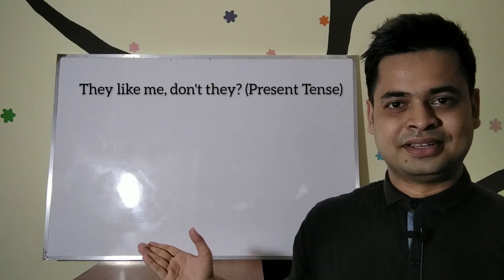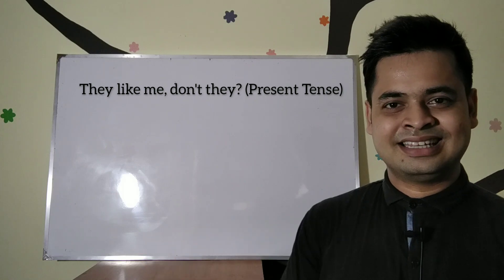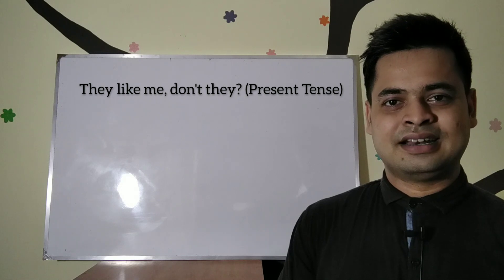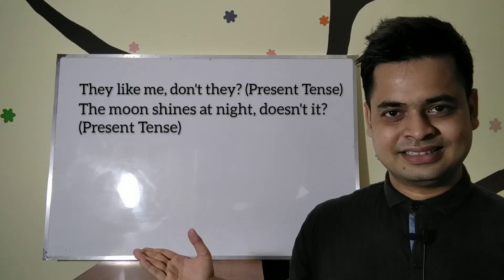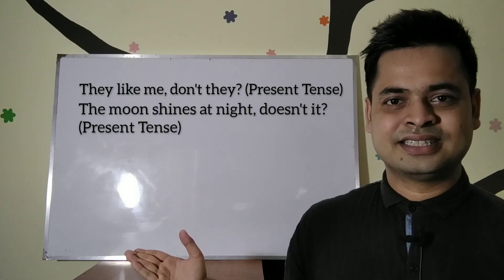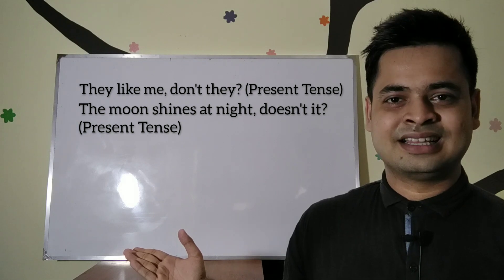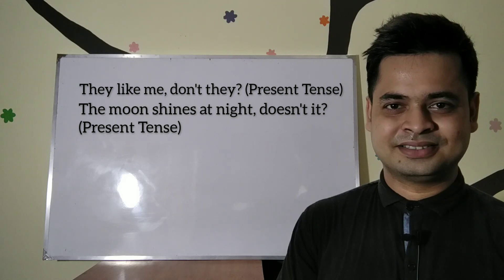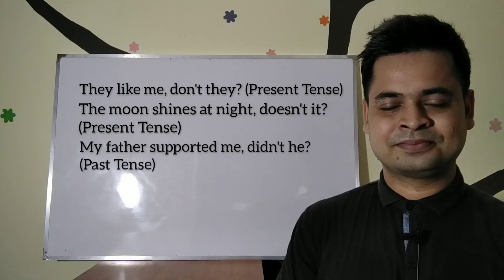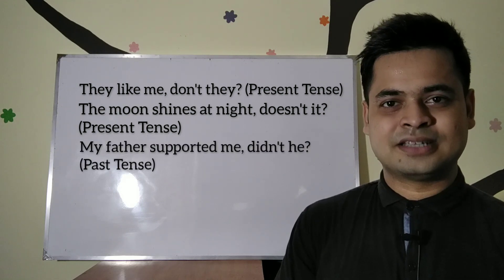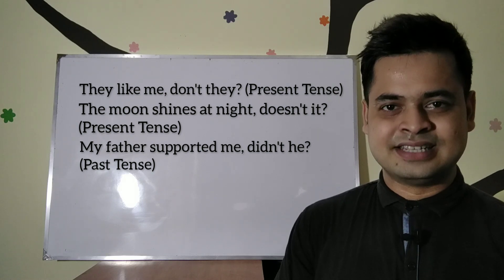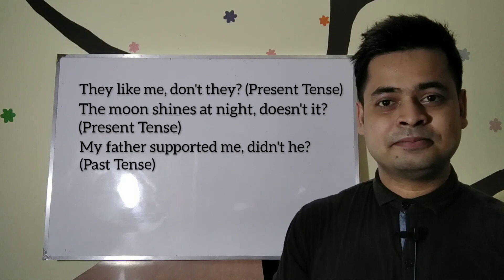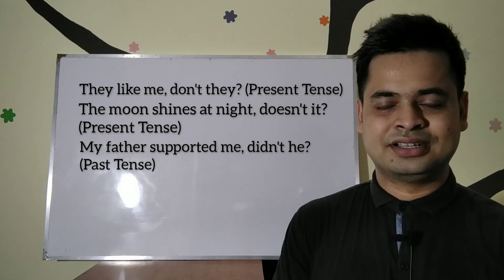For example: 'They like me, don't they?' — the statement is in present tense. Another example: 'The moon shines at night, doesn't it?' — also in present tense. Another example: 'My father supported me, didn't he?' — the statement is in past tense, that's why I have written 'didn't.'